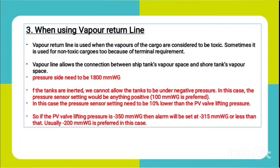If the tanks are inerted, we cannot allow the tank to be under negative pressure. In this case the pressure sensor setting would be anything positive, preferably 100 mm wg. If the tank is inerted, we set the vacuum side pressure sensor to 100 mm wg to prevent air from entering the tank. If the tank is non-inerted, we can set the vacuum side pressure to 10 percent less, and usually we set it at minus 200 mm wg.